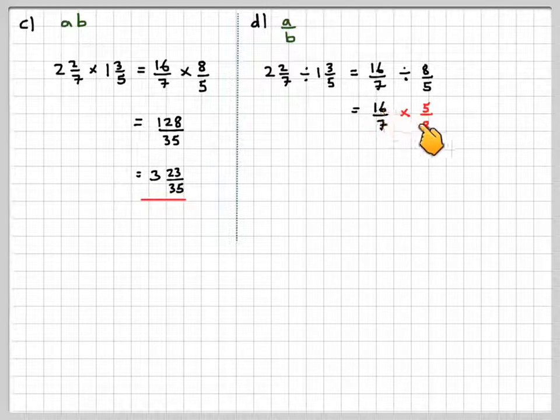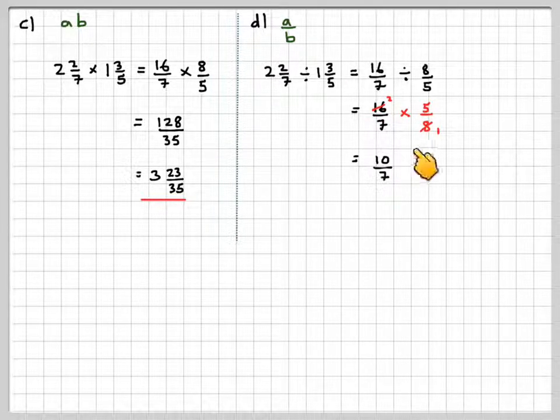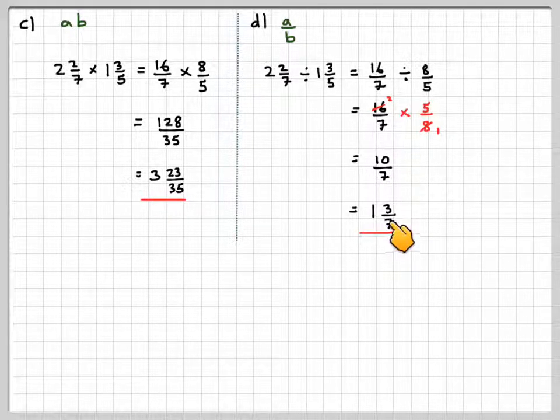Now, we can cancel the 16 and the 8. 8 goes into that once and into 16 twice. 2 times 5 is 10. 1 times 7 is 7. 7 goes into 10 one time and 3 left over. So, this is 1 and 3 sevenths.